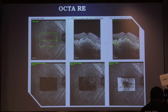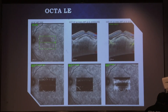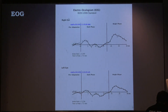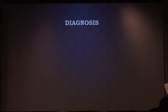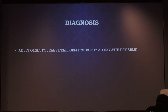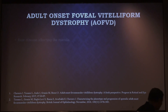OCTA was done in both eyes which did not show any presence of network, so CNVM was ruled out. Electrooculogram showed a normal Arden ratio, so Best disease was ruled out. Thus, the diagnosis of adult onset foveal vitiliform dystrophy along with dry AMD features was made.